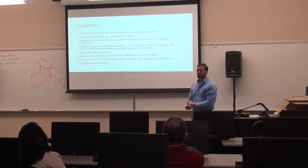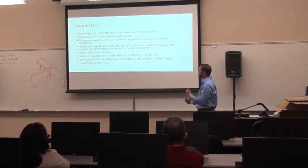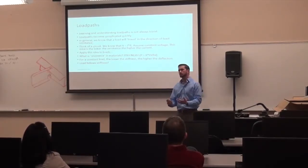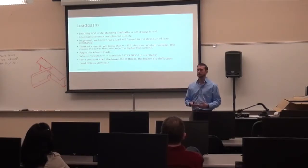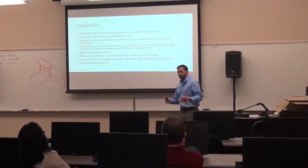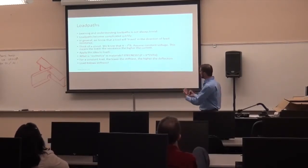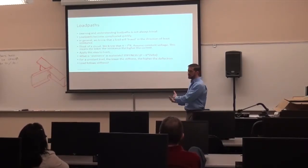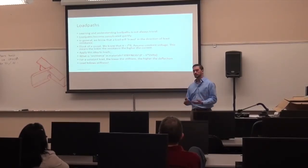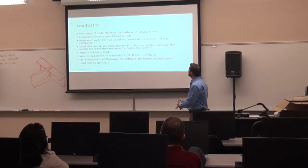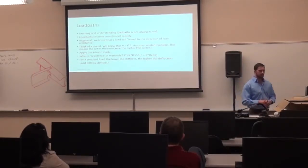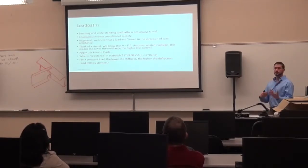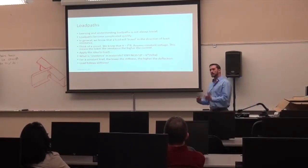Load paths — really what I'm trying to get here is that load travels in the direction of least resistance. In structure, what's resistance? Stiffness. So K equals P over delta — how much does something deflect based on some load I give it? We make this analogy: V equals IR, voltage equals current times resistance. At constant voltage, lower resistance means higher current. Same thing here — P equals K times delta. For a constant load, the lower the stiffness, the higher the deflection. Higher deflection means lower load. So load follows stiffness. Remember that at all times, because when we do some of these free bodies, you may find that you think something's going to be reacted somewhere when it's not, because of stiffness and the capability of the structure.